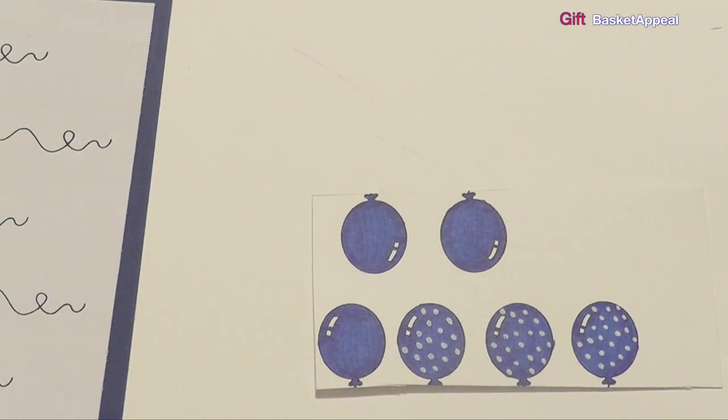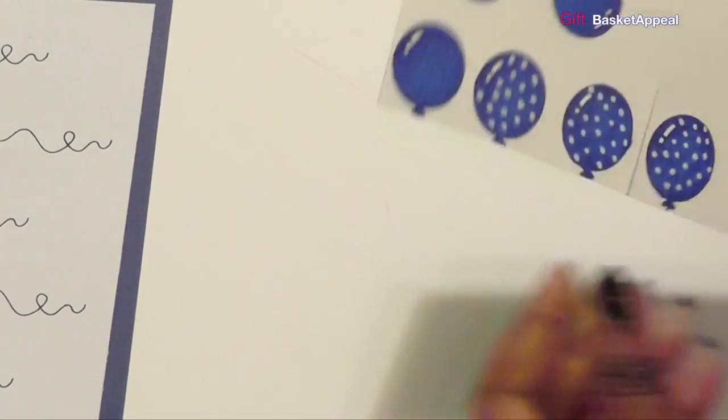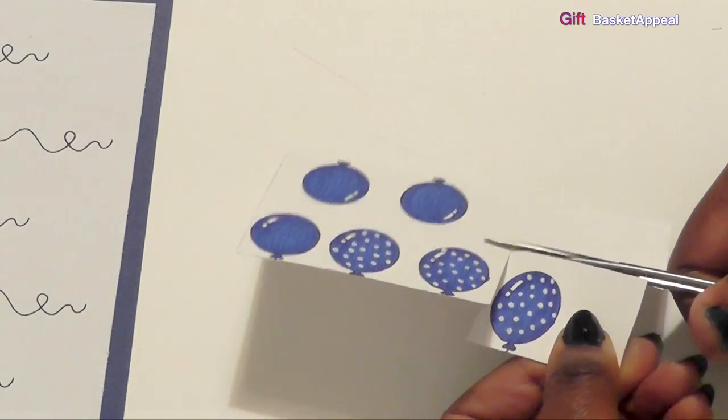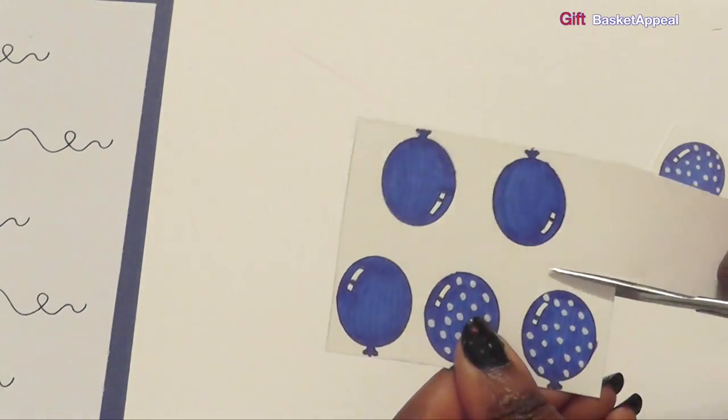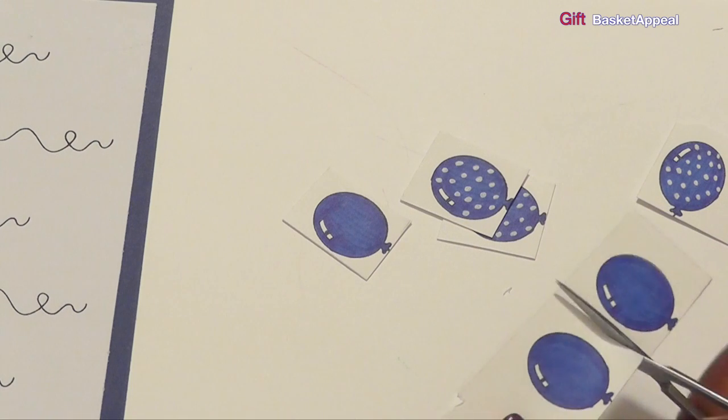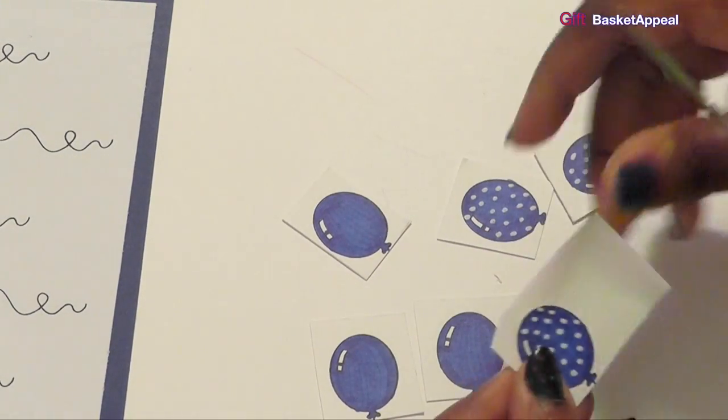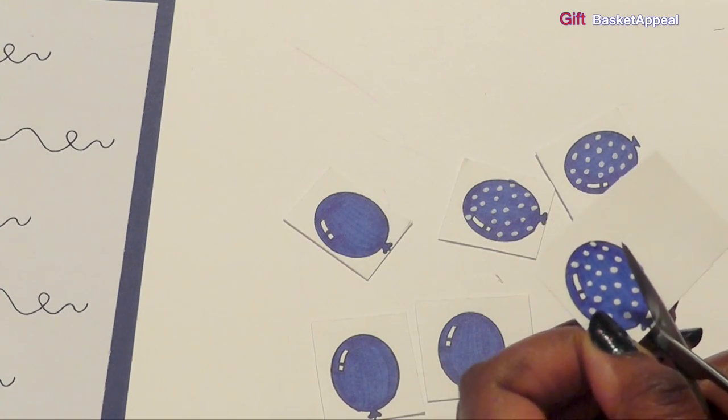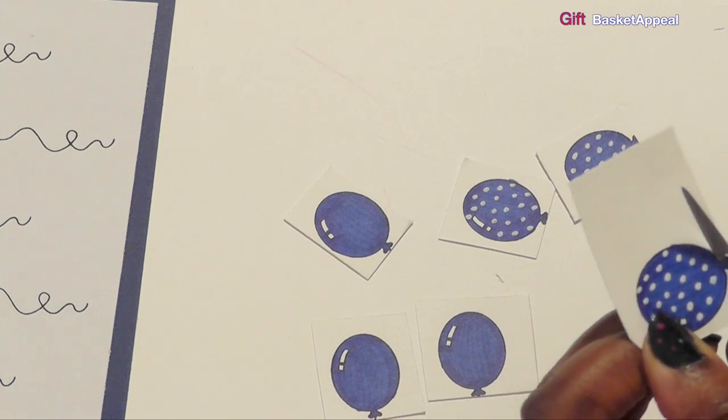And now we're going to do some fussy cutting. This is probably the longest process. I've got this little tiny scissor. It's going to help me a lot. I just kind of rather cut out each one of these individually. And when I first started making cards last July, I wasn't sure what the term fussy cutting meant until I started cutting out some of these individual images. And so, yeah, it's pretty fussy.